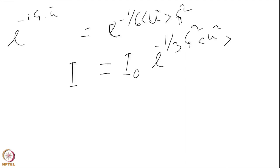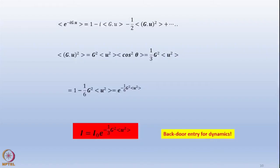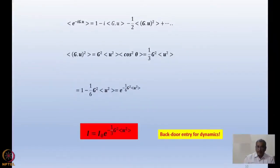As we raise the temperature, u square increases. E to the power minus 1/3 g square u square decreases, so I decreases. Also, if you go to higher and higher q values, that means you go to higher angles of diffraction, then the g value increases. Again, I decreases. This is the most important effect, that when we raise the temperature, we don't lose the Bragg peaks.